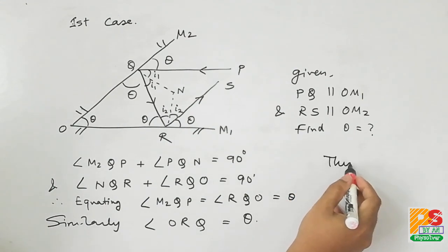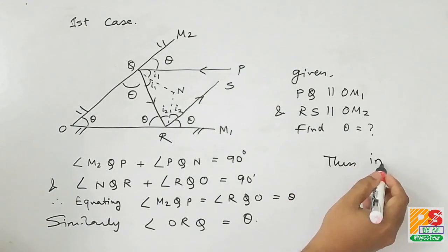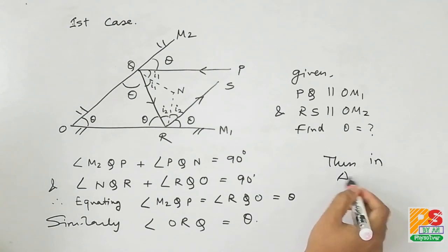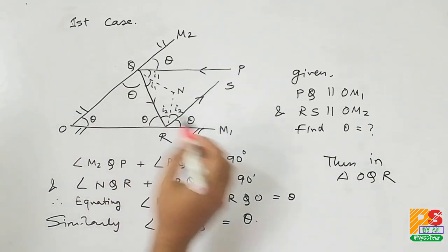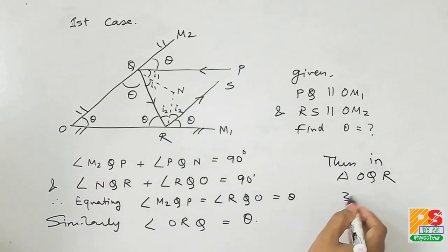Therefore we are almost done. In triangle OQR, the three angles are theta. So sum of them should be equal to 180 degrees, which gives you theta equals to 60 degrees. Now that's the answer.